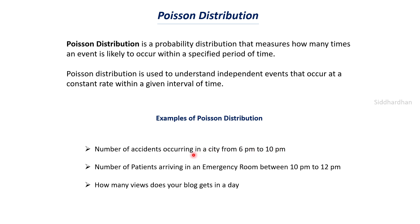Assuming that on average there are about 300 accidents happening, the probability that there will be 1,000 accidents will be very low. We can say there is a very low probability for 1,000 accidents to occur. The probability of 350 accidents is higher, whereas the probability of 1,000 accidents is very low. That is the important insight we can get from Poisson distribution.